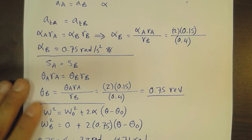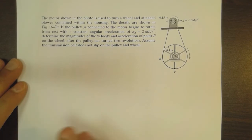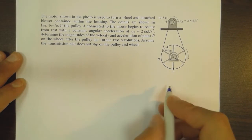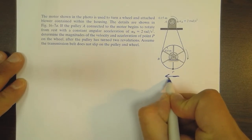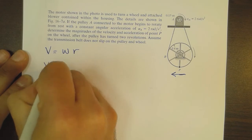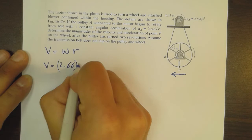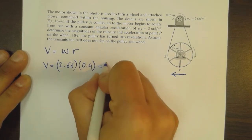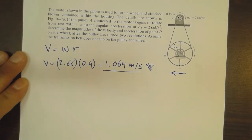Now calculating the velocity and acceleration of point P from the angular parameters. For point P on the rim, the tangential velocity direction is tangential to the rim. V equals omega times R, so V equals 2.66 times 0.4, which gives us 1.064 meters per second. This is the tangential velocity of point P.